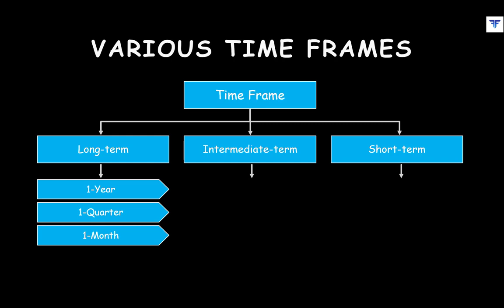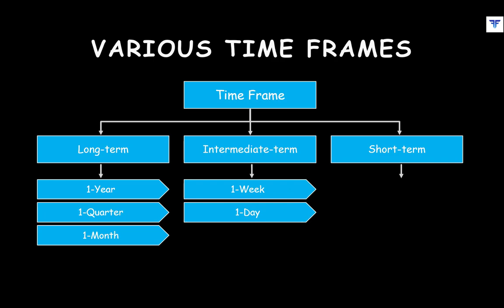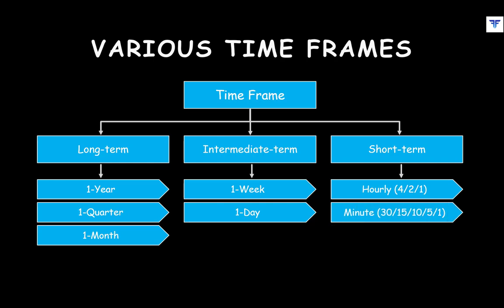The short-term timeframe includes the hourly and the minute timeframe. Hourly timeframes commonly include the 4-hourly, the 2-hourly, and the 1-hourly timeframe. Whereas minute timeframes commonly include the 30-minute, 15-minute, 10-minute, 5-minute, and 1-minute timeframe. These timeframes are used to understand and analyze the shorter-term and intraday price trends of securities.